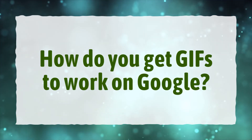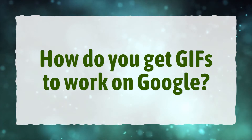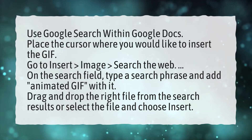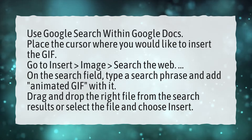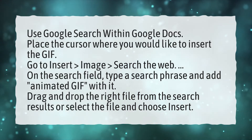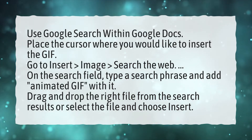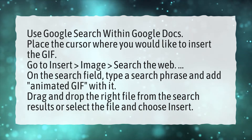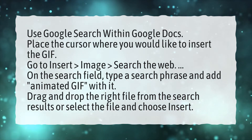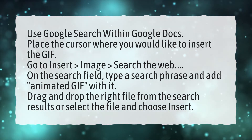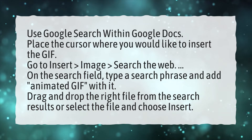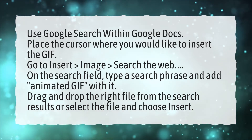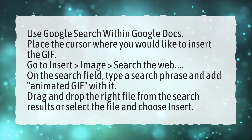How do you get GIFs to work on Google? Use Google Search within Google Docs. Place the cursor where you would like to insert the GIF. Go to Insert, Image, Search the Web. On the search field, type a search phrase and add Animated GIF with it. Drag and drop the right file from the search results, or select the file and choose Insert.